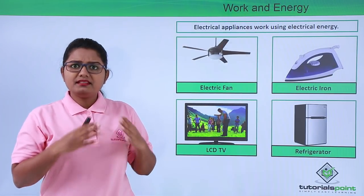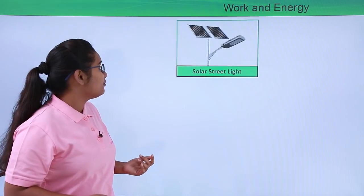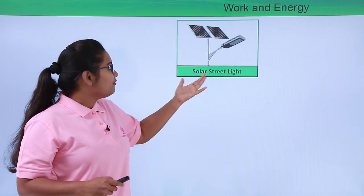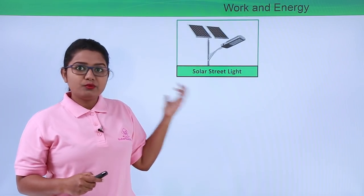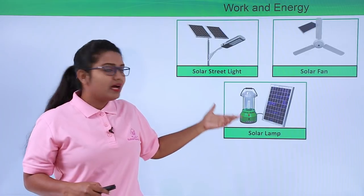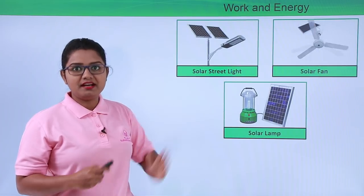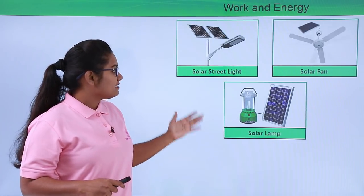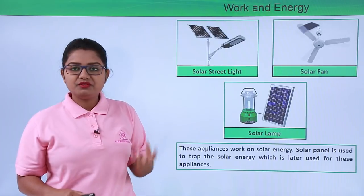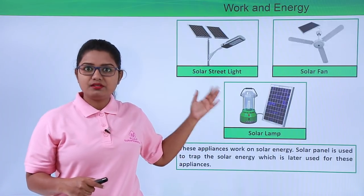All these appliances are based on electrical energy, but there are many other kinds of energy we use nowadays. One such kind is solar energy — the energy extracted from sunlight. We have appliances based on solar energy, such as the solar street light, the solar fan, and the solar lamp. These appliances have a solar panel connected to them, which traps solar energy from sunlight when placed under sunshine.